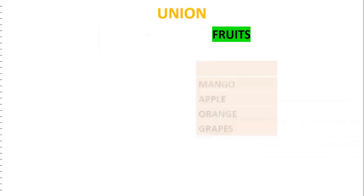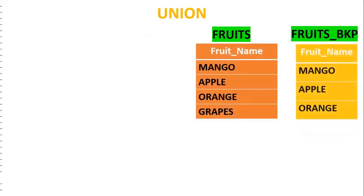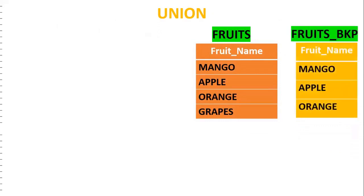Now we'll see the set operators one by one. What is union? Fruits table has four records, and fruits_backup has three records. Fruits has mango, apple, orange, grapes; fruits_backup has mango, apple, orange.